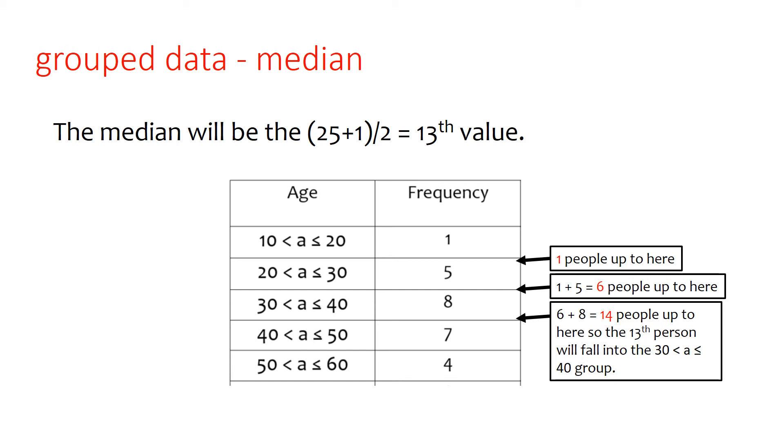And then adding on the next age bracket, 30 to 40, that takes us up to one plus five plus eight, which makes 14. So we know that that 13th person must have appeared in that 30 to 40 age group. So the median will be somewhere in that age group. We don't know where, but we know it's in that group.